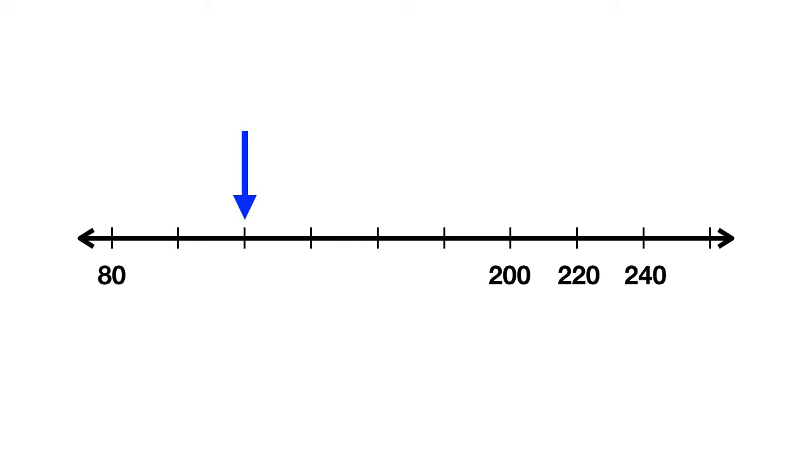Now here's your last problem for today. On this number line, find what this arrow is pointing at. If the first number is 80, and at the end we have a 200, 220, 240, 260.